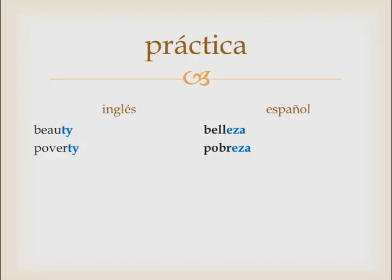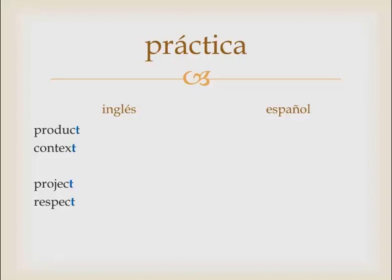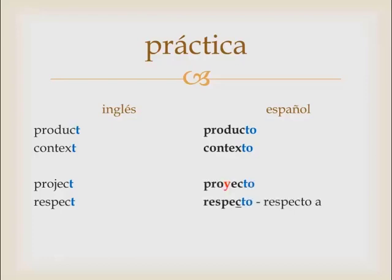Poverty — 'pobreza.' Beauty — 'belleza.' These ones are a little easier: product, context, project, and respect. These words all end in either C-T or X-T. In Spanish: 'producto,' 'contexto' — just add an O if the word ends in a T. Project is 'proyecto,' respect is 'respecto.'